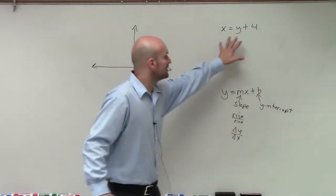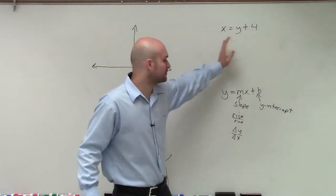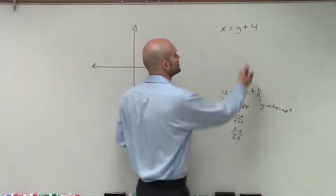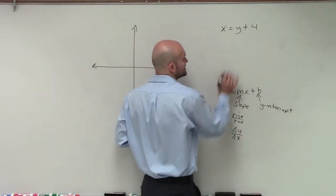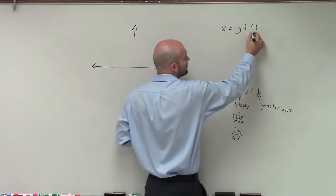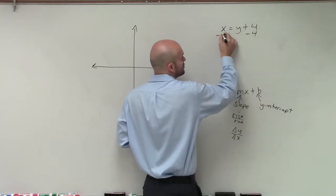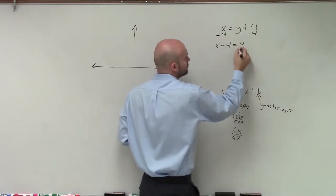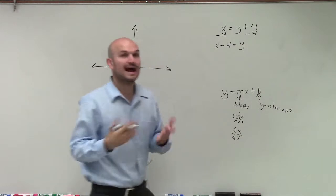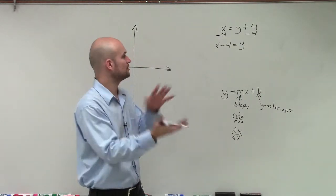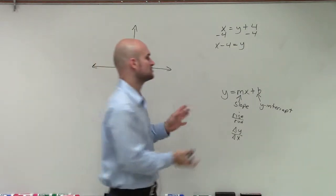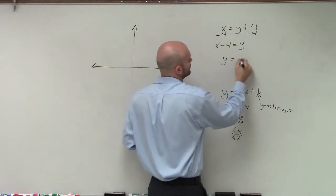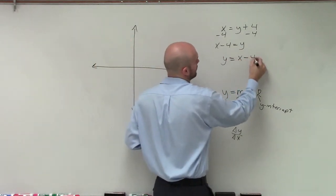First, let's take this and rewrite it in slope-intercept form. To do that, I need to isolate my y variable. So I'll subtract 4 over here, giving me x minus 4 equals y. Now I'm just going to flip this so y is on the left: y equals x minus 4.